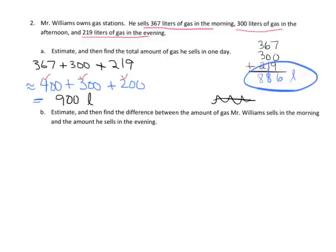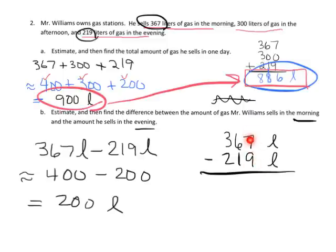Now let's find the precise amount using the standard algorithm. We've got 367 liters subtract 219 liters. 7 minus 9—we don't have enough ones to take away 9, so we're gonna do some decomposing. We take one ten of these six tens, leaving us with 5, and decompose it to 10 ones. So now we have 17 ones, and 17 minus 9 is 8. Then we have 5 tens take away 1 ten, so 5 minus 1 gives us 4 tens. Then 3 hundreds subtract 2 hundreds gives us 100. That's 148 liters.